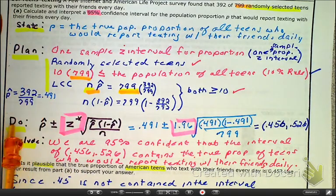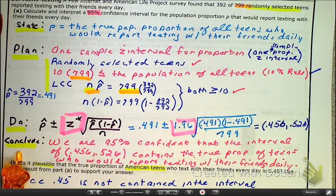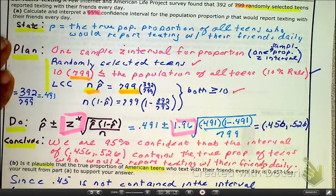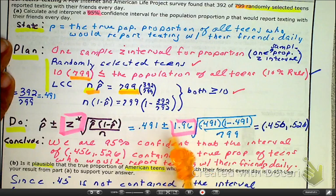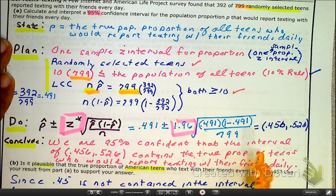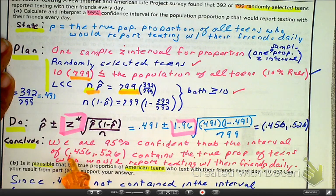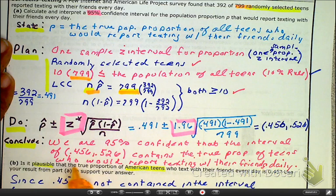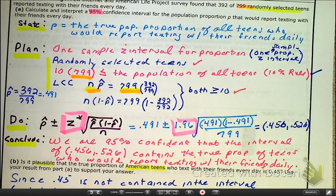So, we've got our state, our plan, our due. Now, we're going to conclude. So, as we conclude, remember, we are interpreting it in context. So, we are 95% confident that the interval of 0.456 and 0.526 contain the true proportion of teenagers who would report texting with their friends daily.